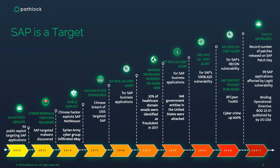Two out of three attacks come in externally. COVID forced many businesses to push things that were inside their firewalls outside of them. That created a lot of shift in security, as well as many other operational changes. A lot of organizations had a real challenge keeping their environment secure as they pushed to allow people access from home.